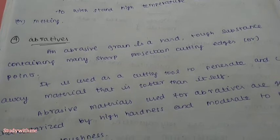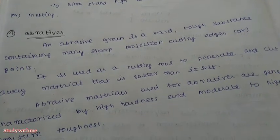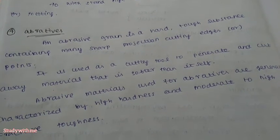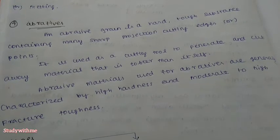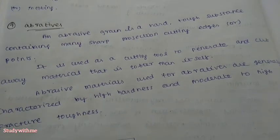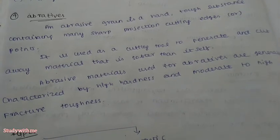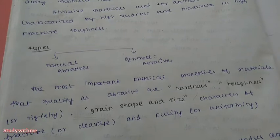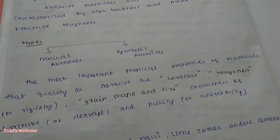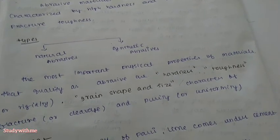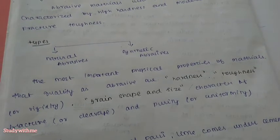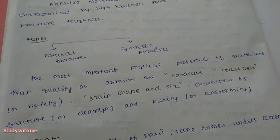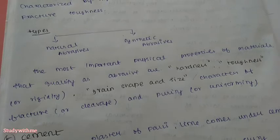Abrasives have many sharp projections, cutting edges, or points. They are used as cutting tools to penetrate and cut away material softer than themselves. Abrasive materials are characterized by high hardness and high fracture toughness. Types include natural abrasives and synthetic abrasives. Important physical properties are hardness, toughness, grain shape and size, fracture characteristics, and purity.